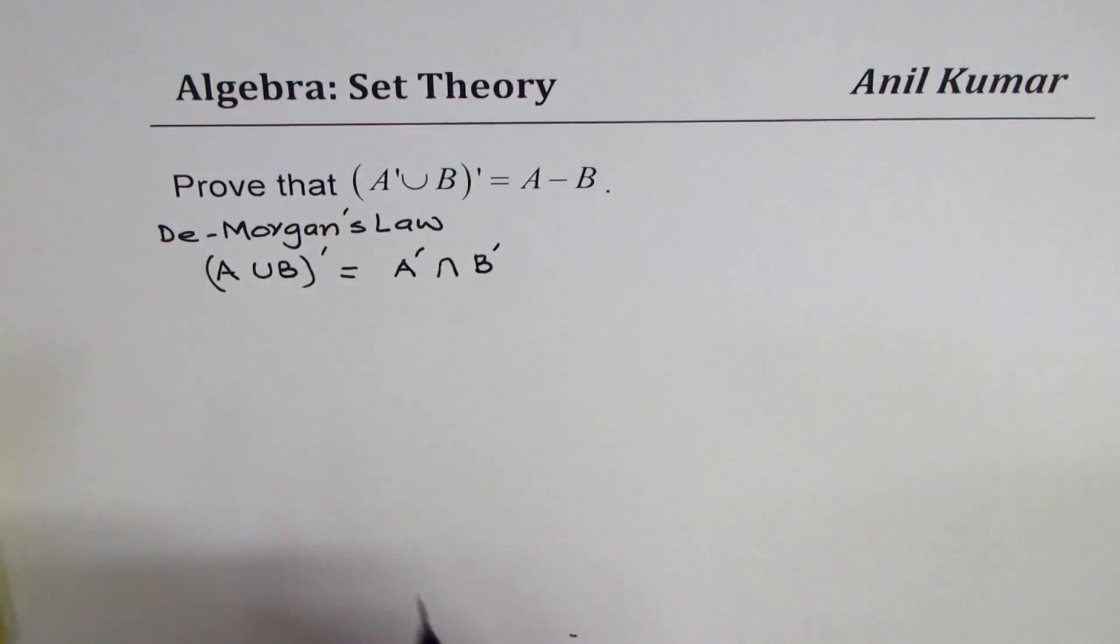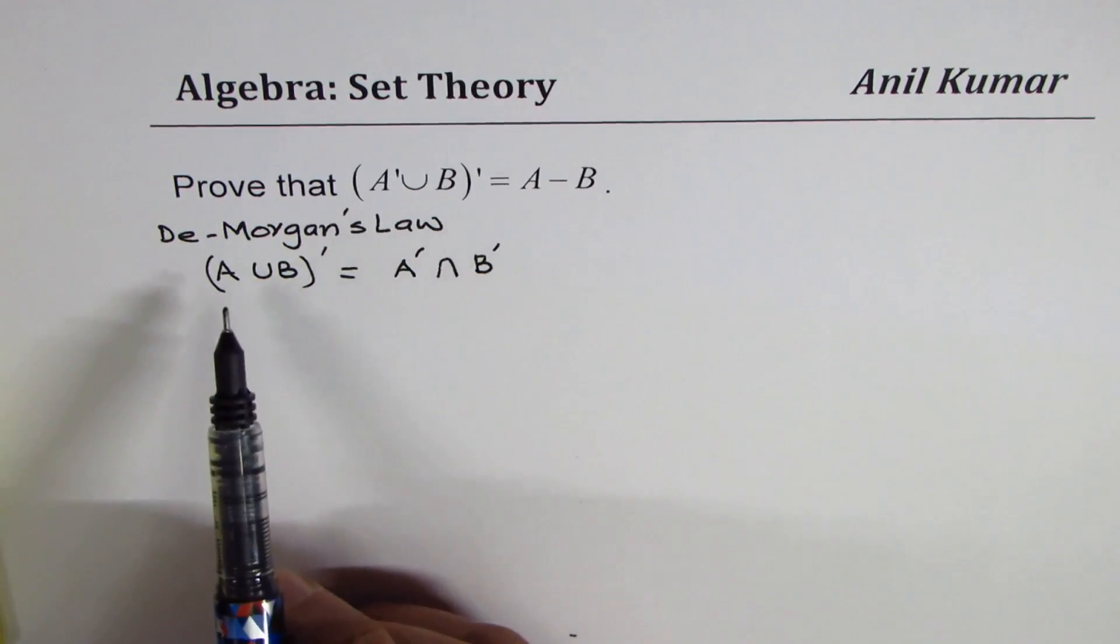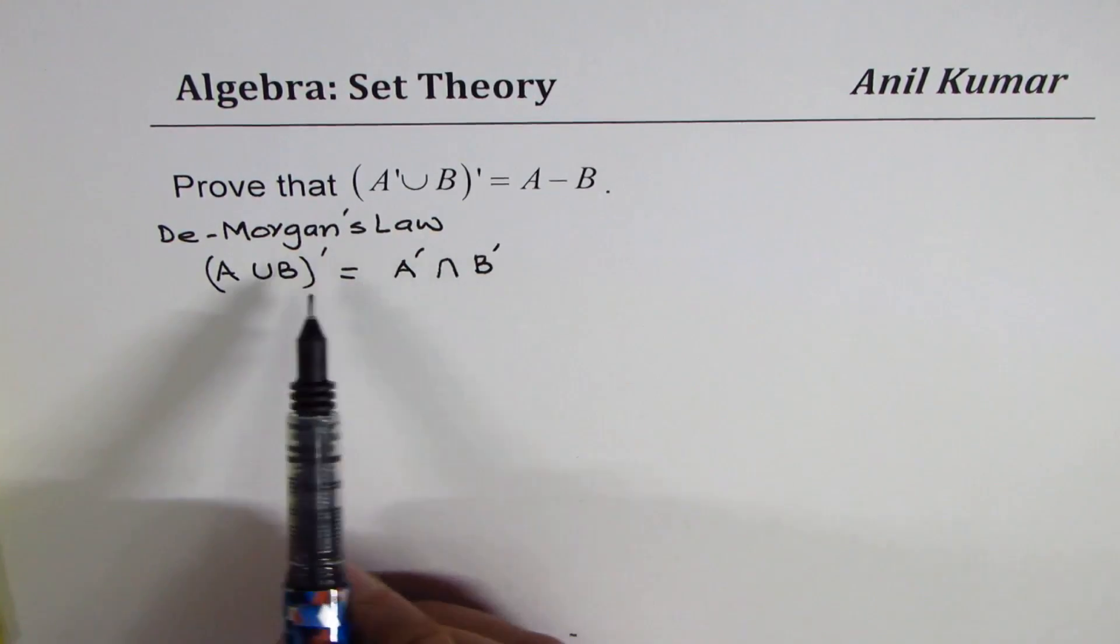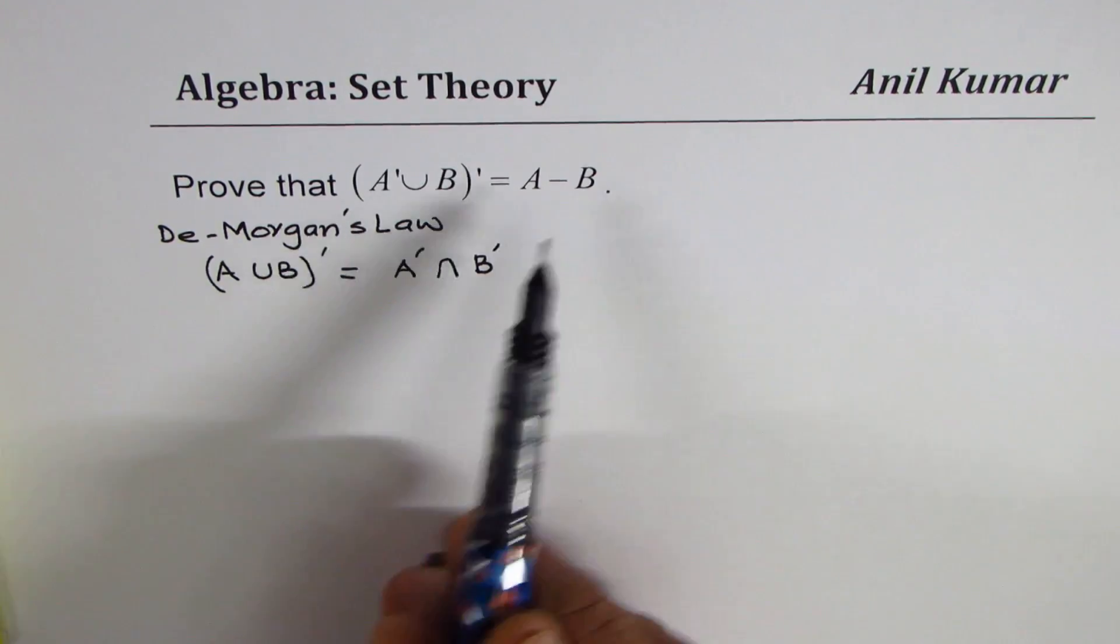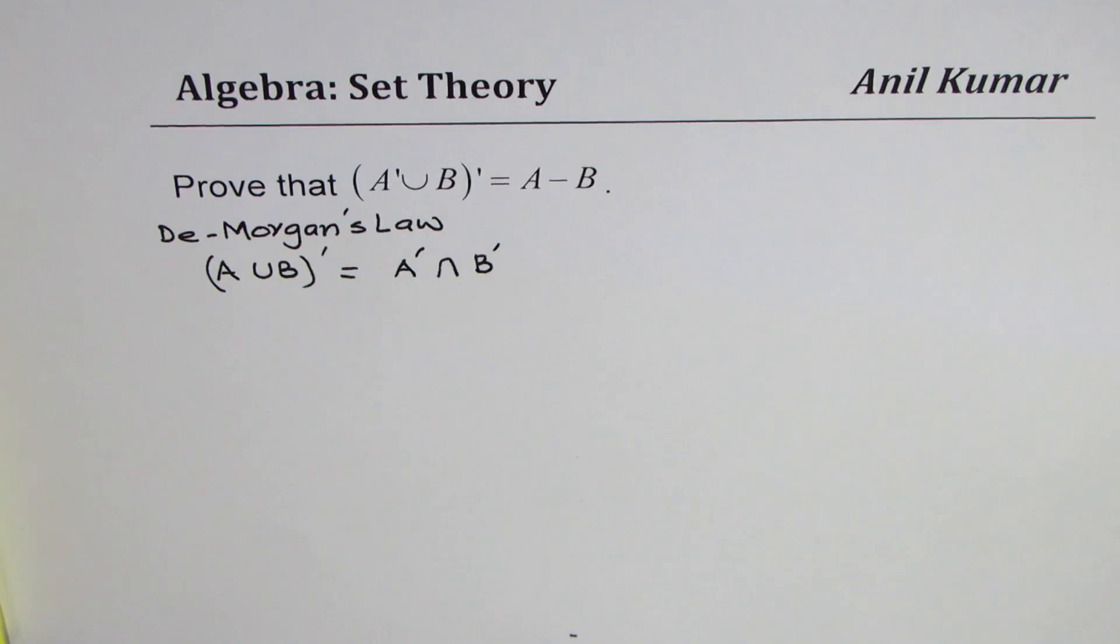De Morgan's law relates A union B complement with the intersection of complements of A and B. Since you have something complement to prove A minus B, I'd like to begin from here, so I'll prove this law first and then move forward and prove the identity which you want.